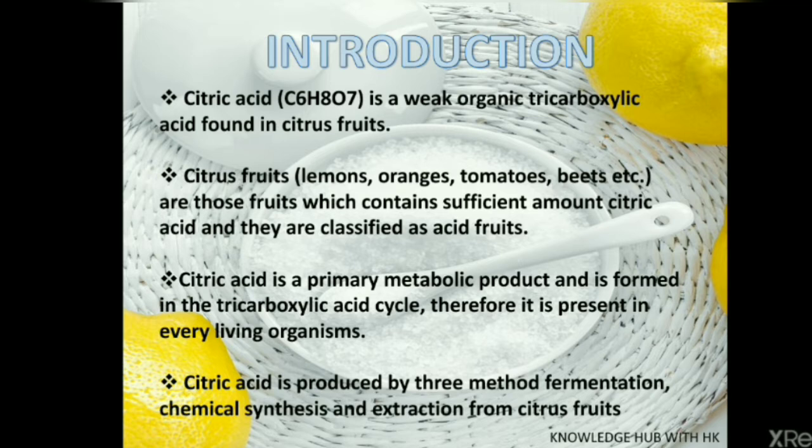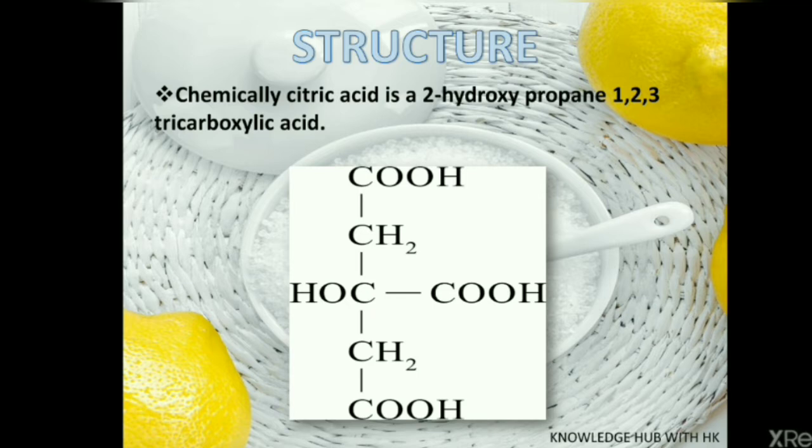Citric acid is produced by three methods: first is fermentation, the second method is chemical synthesis, and the final is extraction from the citrus fruit. The citric acid structure is given in this slide and chemically it is a 2-hydroxypropane-1,2,3-tricarboxylic acid.